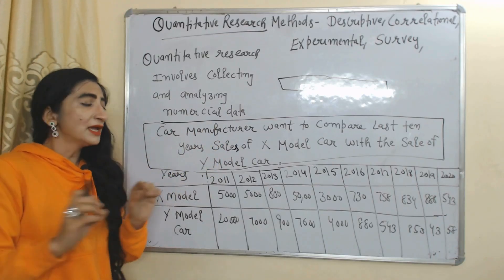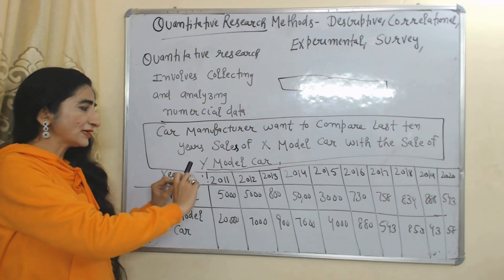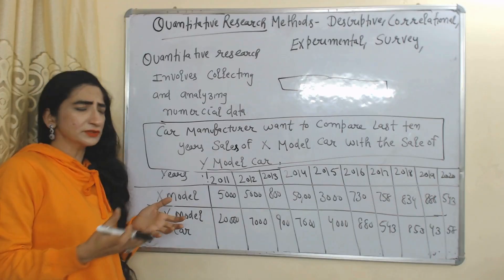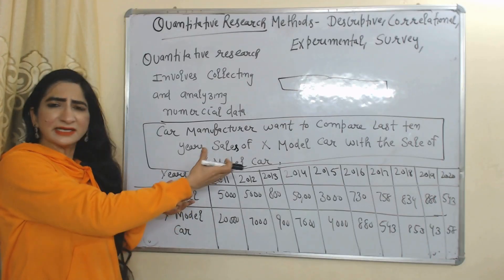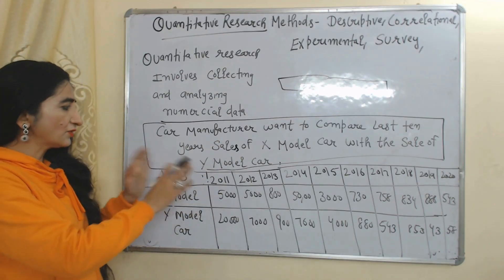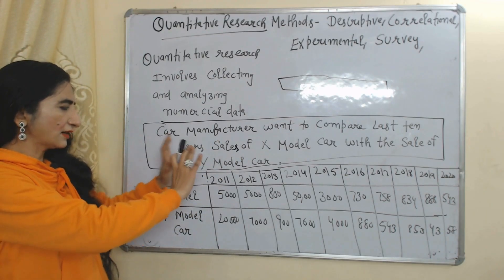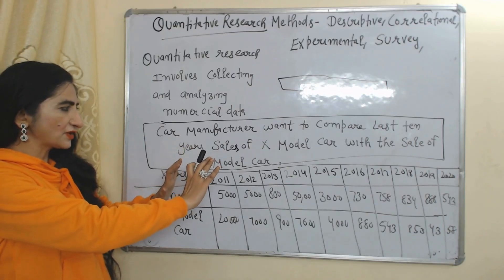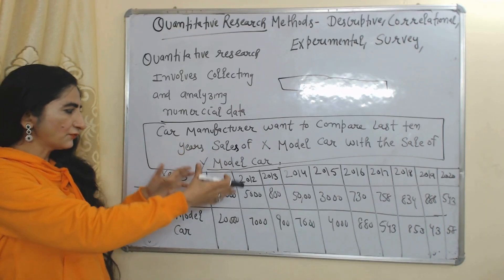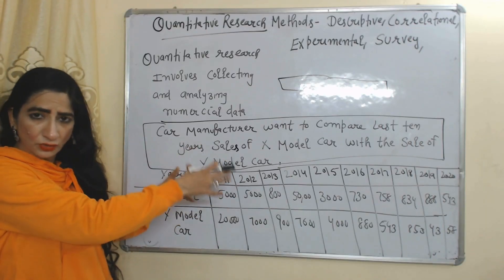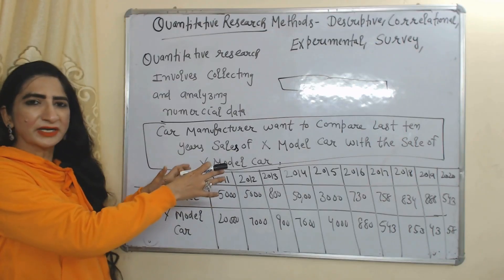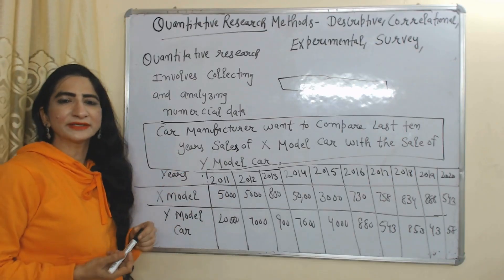In order to get this information, he will use the last 10 years' sales figures of both car models. Here you can see the car manufacturer analyzing and collecting information through numerical data — that's why it is called quantitative research.